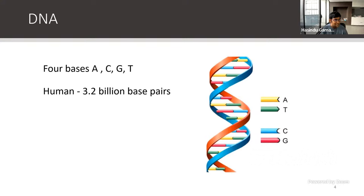Interestingly, if you take something like wheat, it is like 20 gigabases — six times the human genome. So a longer genome doesn't mean the organism is more intelligent or complex. These are mysteries.